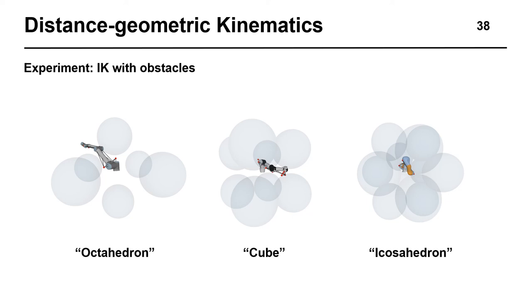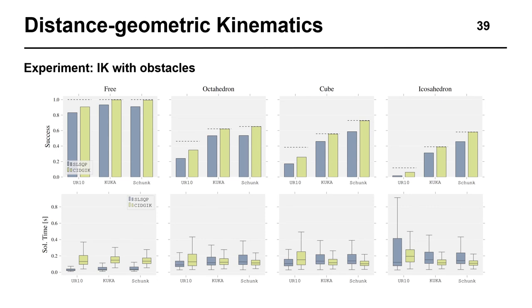Given that both obstacles and decision variables lie in the same space, we expect approaches based on the distance model to recover solutions more easily than conventional approaches. To test this hypothesis, we set up a simple experiment where some common manipulators are located in highly restrictive environments, and our goal is to find solutions to inverse kinematics problems when they are feasible.